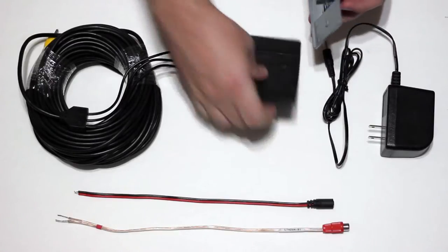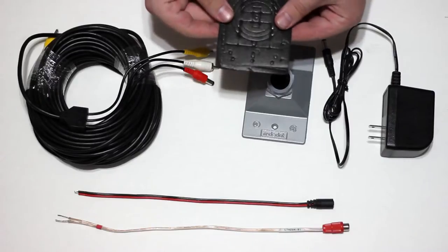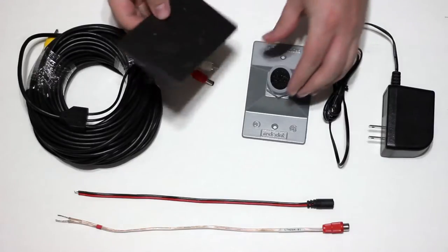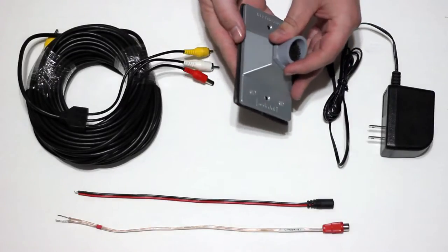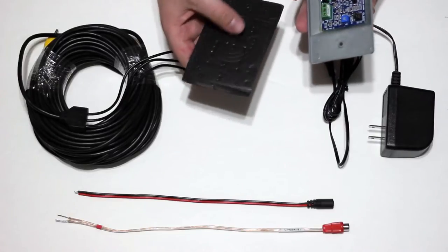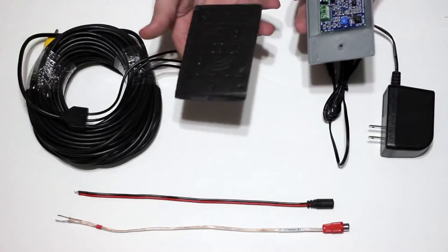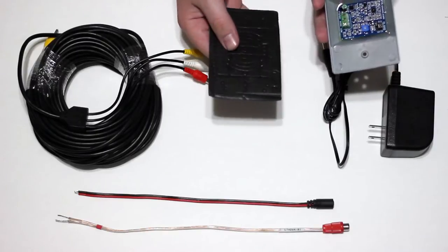It comes with this gasket basically just to serve as a seal behind the microphone. It has provisions for all sorts of different holes and things that you could punch through for running your wires.